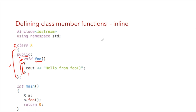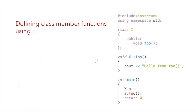What experienced programmers usually do is declare data members and functions inside the class, and then define the member functions using the scope resolution operator. After the class definition, in main we create object 'a' of class X and call 'a.foo()' using the dot operator. The output is simply the hello message printed by foo.